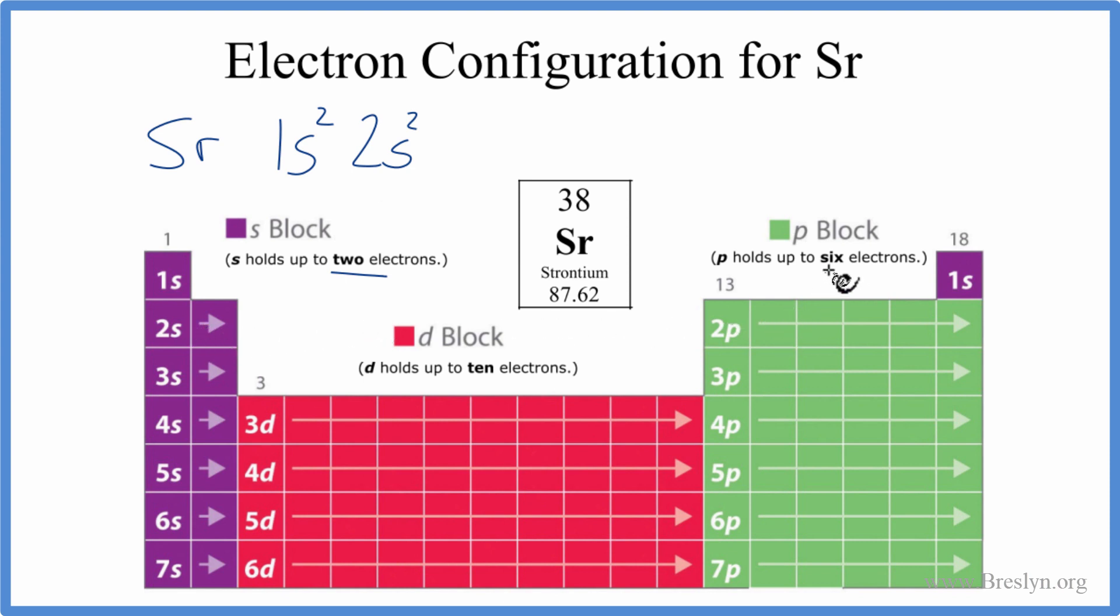We'll go from 2s to 2p. P can hold up to 6, so we'll put a 2p⁶, 3s², 3p⁶, 4s². And at this point, we've used 20 valence electrons.